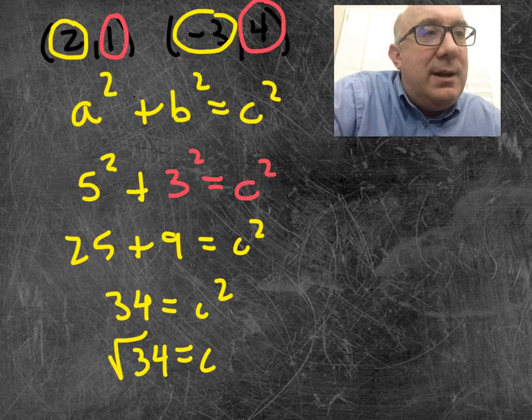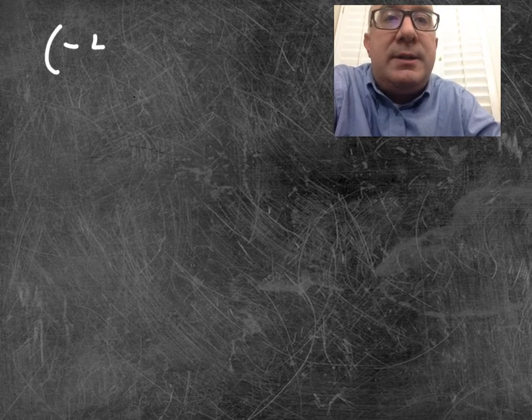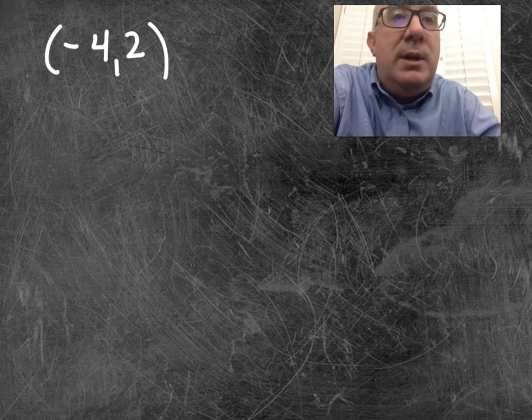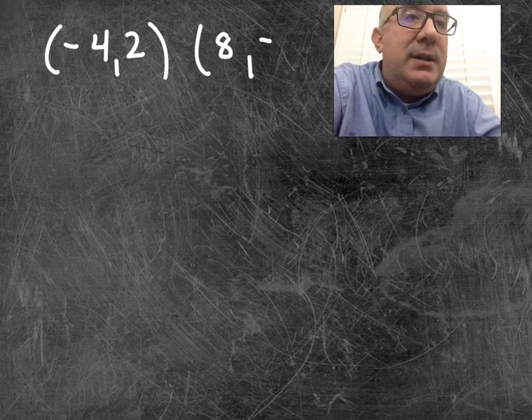Now that, at least for me, went pretty quick. Let's try another one here. Just quickly, to give you an idea, let's just pick whatever, minus 4 and 2 and 8 and negative 6.